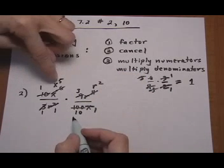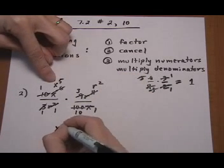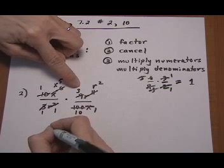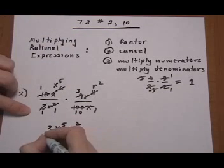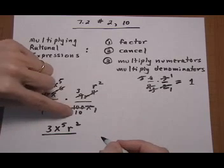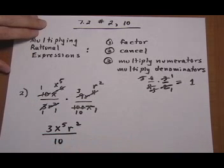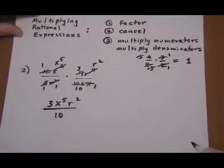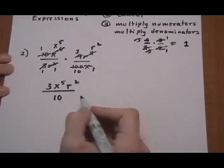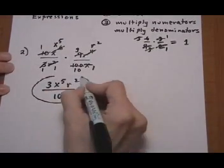Now we look to see what pieces we have. We have an X to the 5th, 3, R squared, all over 1 times 1 times 10, which is 10. And then at the end just double check to see if you've forgotten anything for canceling and I don't see anything else that cancels. So that would be our final answer.